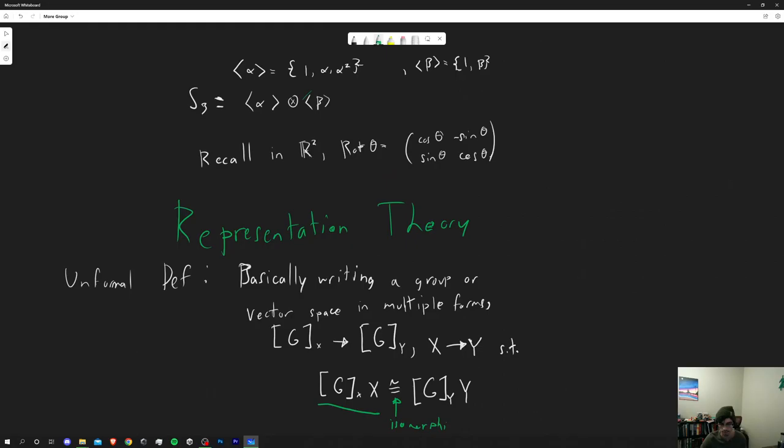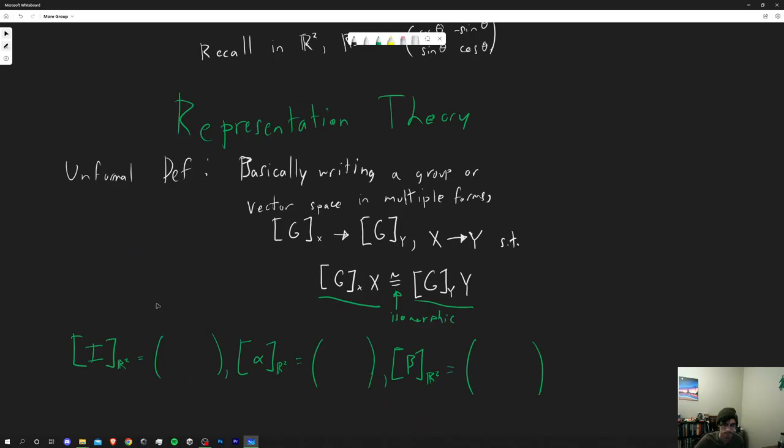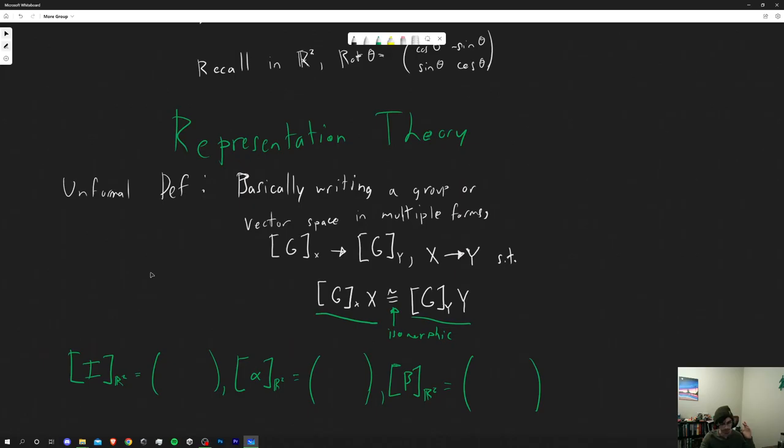So this one would be group G acting on set X we're going to turn it into representation of group G acting on set Y and then there's a transformation of X from set X to set Y. And so then the formal definition would be that the representation of group G acting on X is isomorphic to group G acting on Y. So isomorphism means that if you apply the group to the set all the elements maintain their relationships of the operator like them operating with each other and that sort of thing.